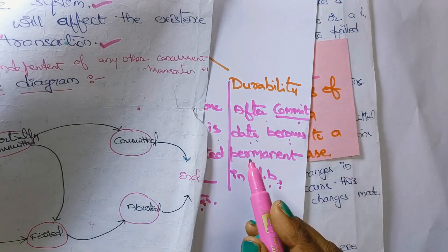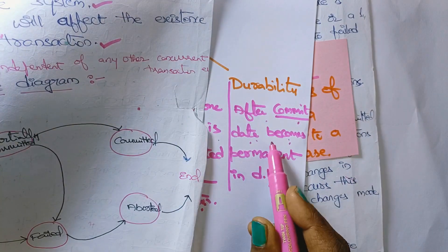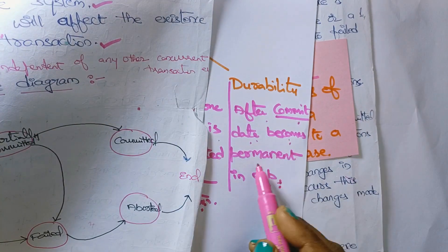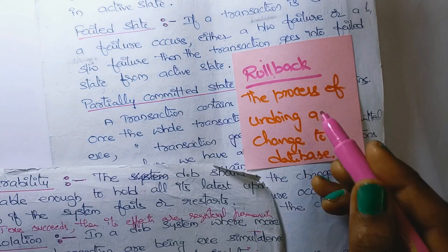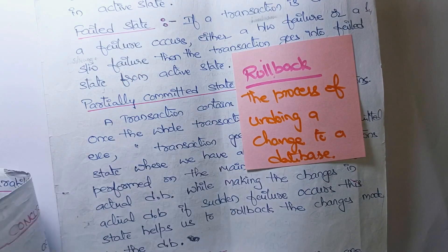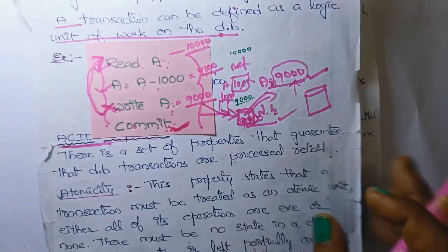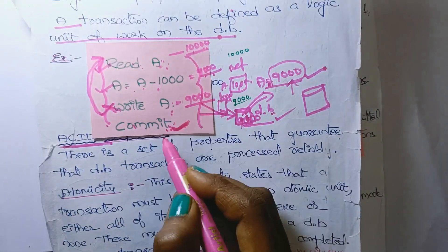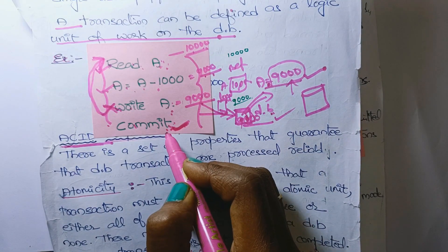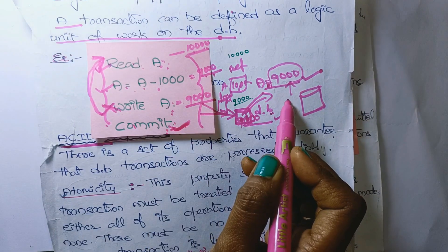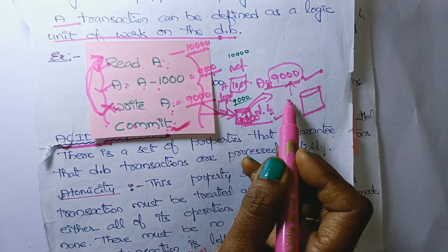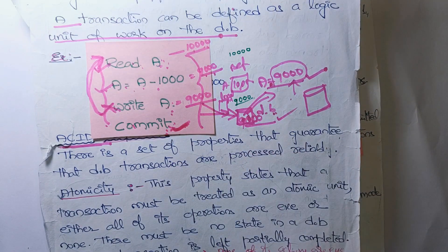Durability is nothing but after a commit, data becomes permanent in the database. After commit, if the transaction is committed, whatever changes were made will be permanently stored in the database. That is nothing but durability.